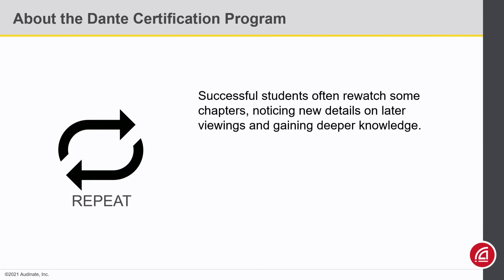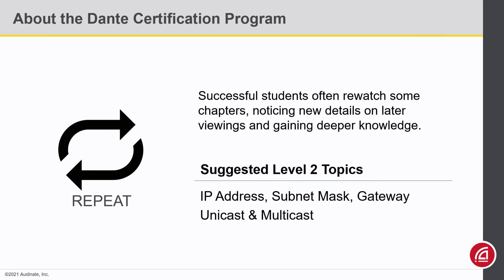Finally, I think it's helpful to recognize that successful students tend to watch some of these topics multiple times. So if you feel that need, don't worry, you're not alone. Besides the chapters in this class, I might also suggest reviewing Level 2 topics like IP Address, Subnet Mask, and Gateway, as well as the chapter on Unicast and Multicast. Those play a big role in this class.